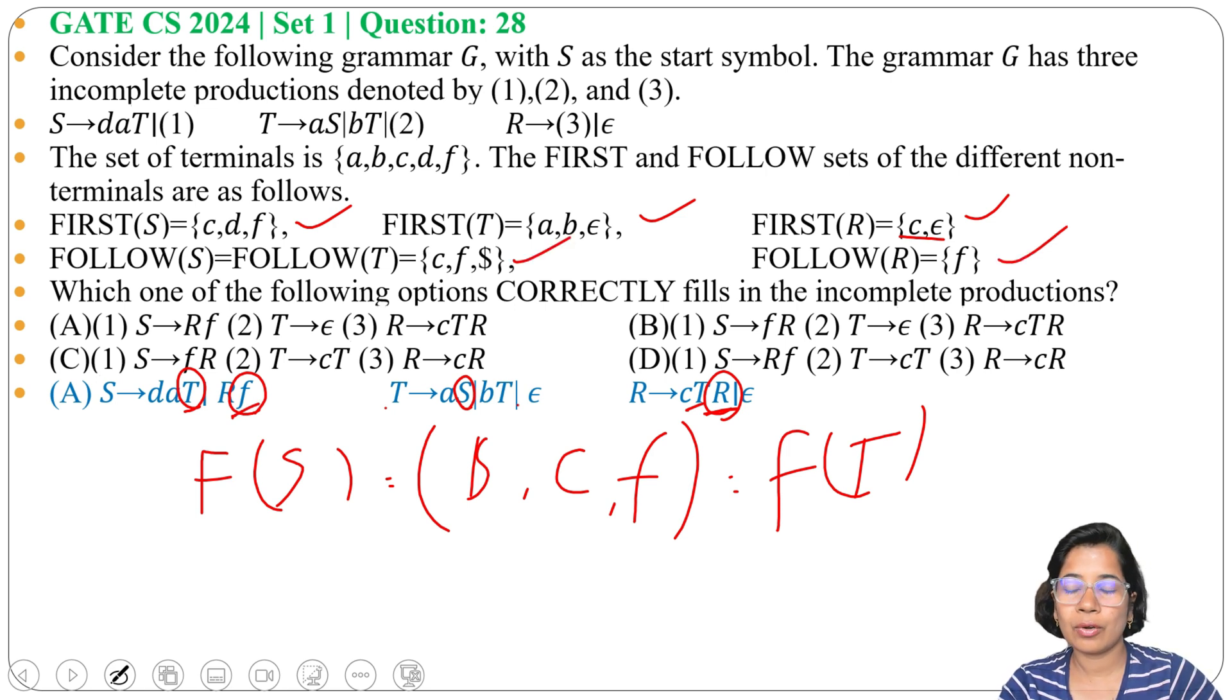We found same first and follow by putting these productions in place of 1, 2, and 3. That's why option A is the answer.